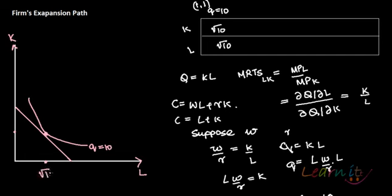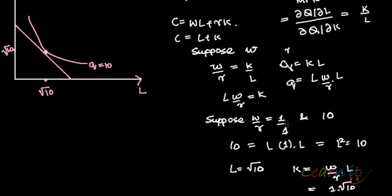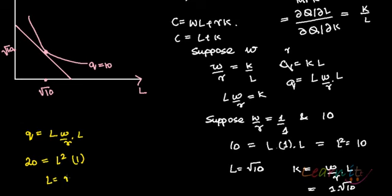Here my labor is equal to √10 and my capital is also equal to √10. Now suppose I want to produce a higher amount, Q = 20, with everything else unchanged. Then Q = L²·(W/R), so 20 = L²·1, giving L = √20. Similarly, K = √20.